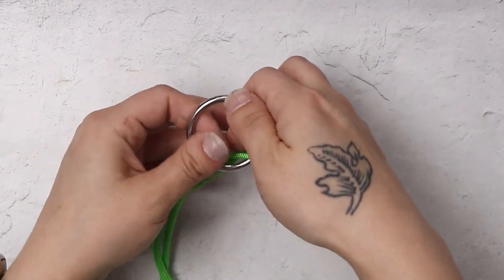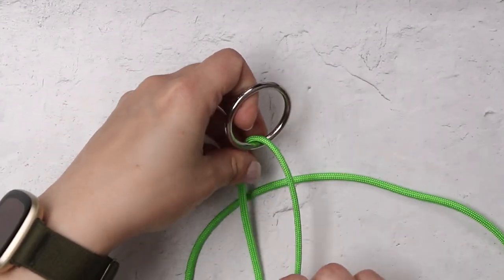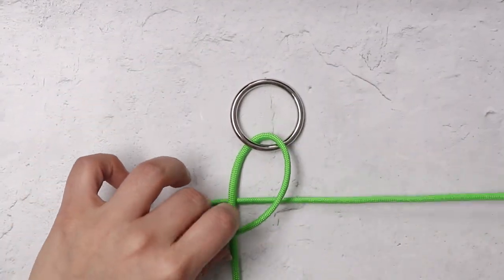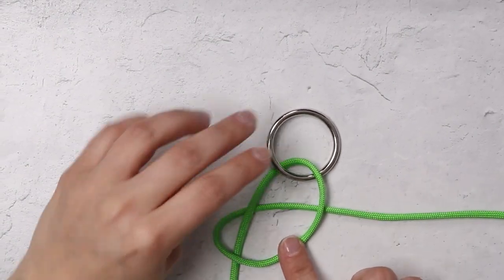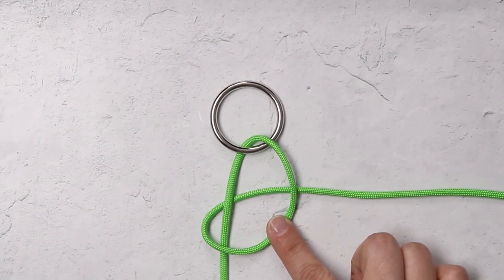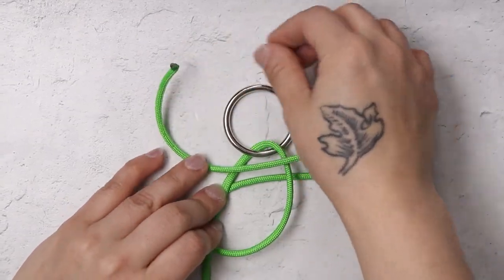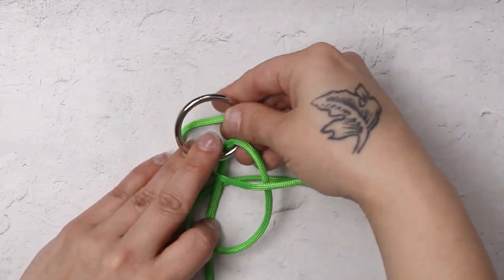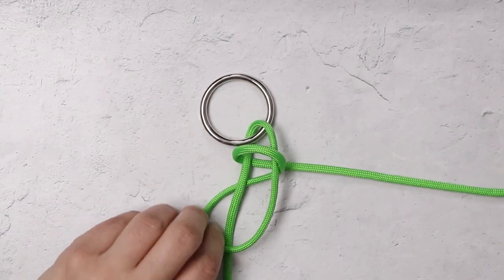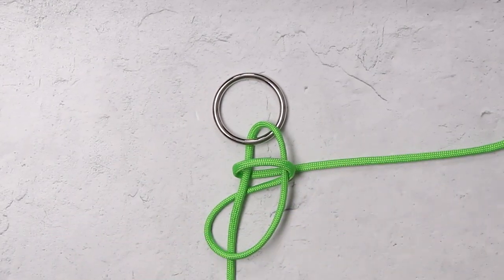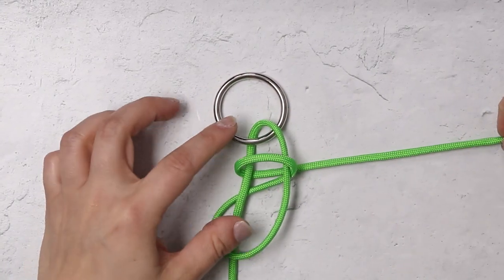Then you want to take your working end and wrap it around the back or basically bring it behind the ring so that it is again on your right hand side. Then you want to take your working end and wrap it to the left over the top of your stationary cord again and you want to do that twice.